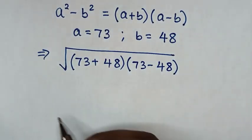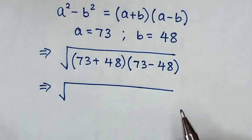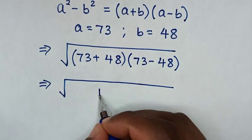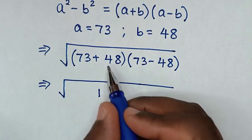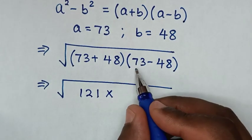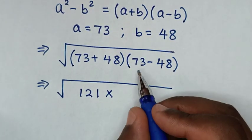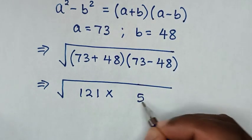Then it will be square root of, 3 plus 8 is 11, 7 plus 4 is 11, plus 1 is 12. So 121 times, 73 minus 48, 13 minus 8 is 5, 6 minus 4 is 2. So it will be square root of 121 times square root